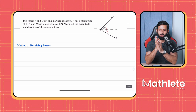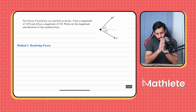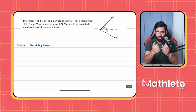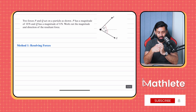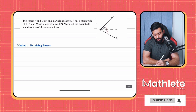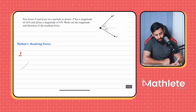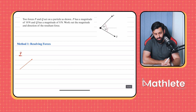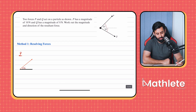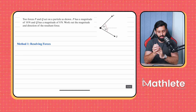This is Method 1: resolving forces. Both forces will have a horizontal and vertical component. Because these forces are acting at an angle, we need to first break them down into horizontal and vertical components. Let's start by resolving P, which is acting at an angle of 45 degrees to the horizontal. There will be an x component and a y component.